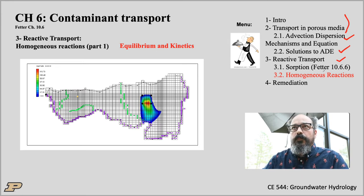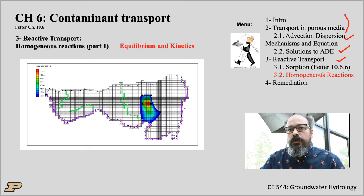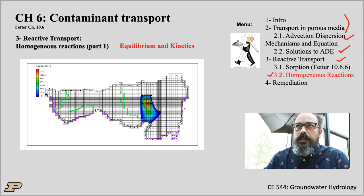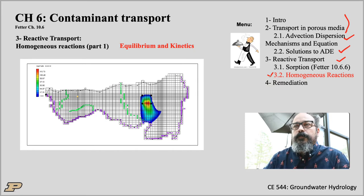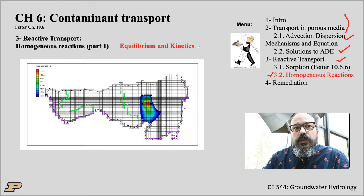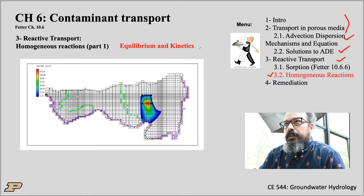Today we will review some basic chemistry for those who may not have had much during undergrad — specifically the concepts of equilibrium reactions and kinetics. This is part one of the homogeneous reactions. In the next lecture, we will look at biodegradation, essentially Monod kinetics, different types of kinetics, and also the problem of particle transport, colloids, and filtration theory.